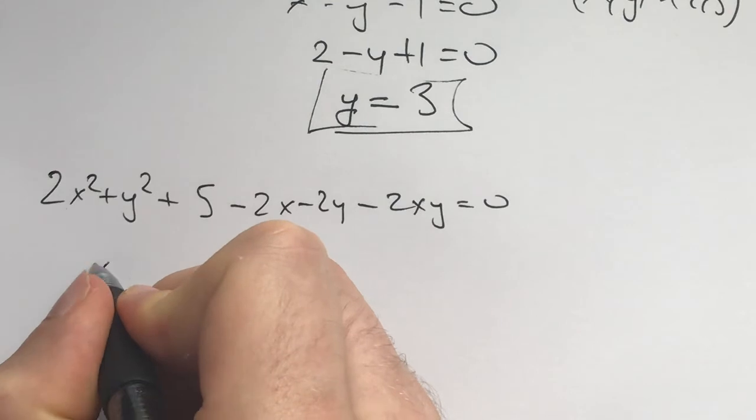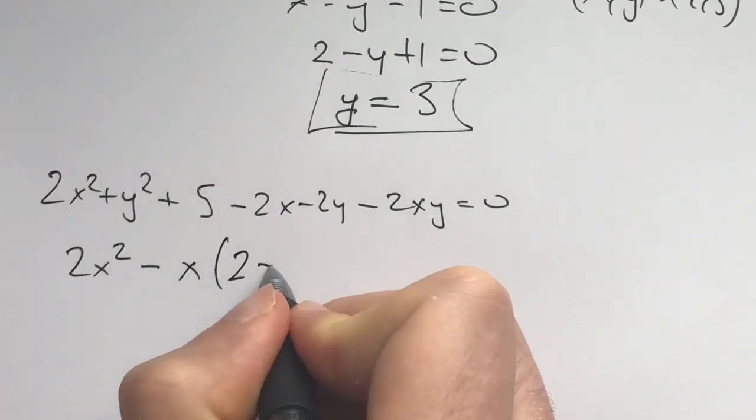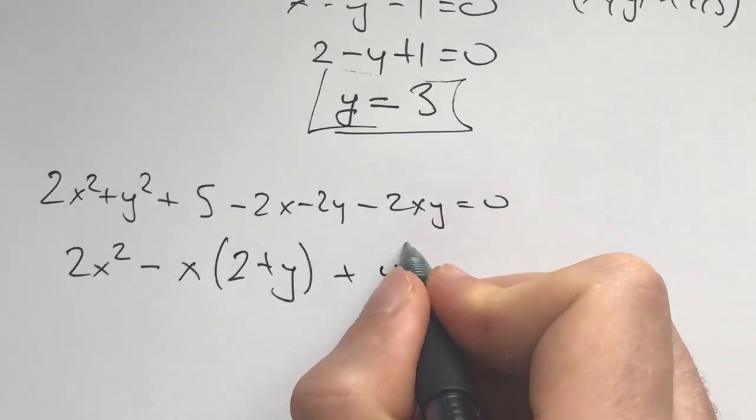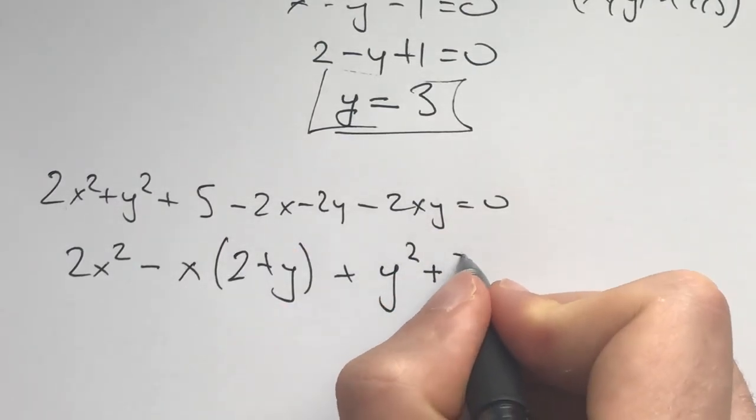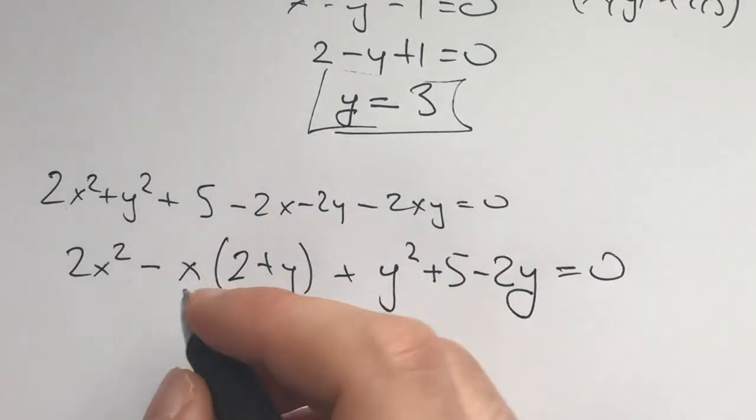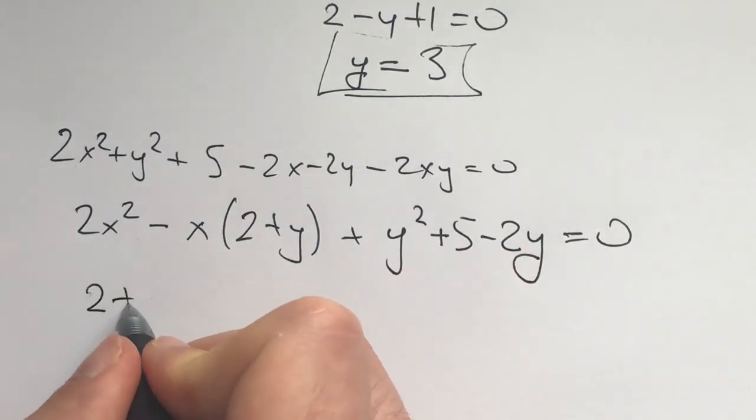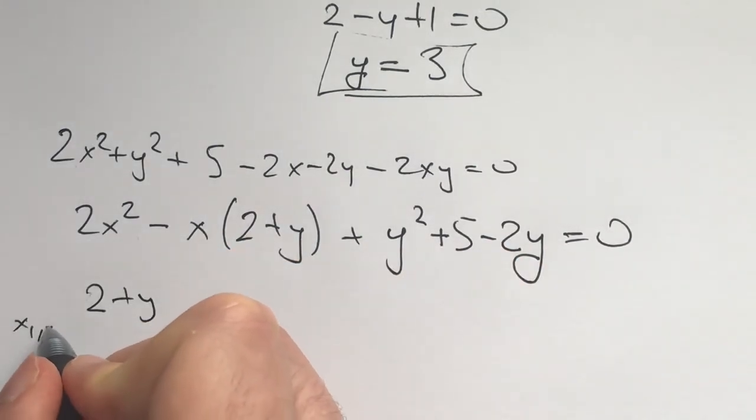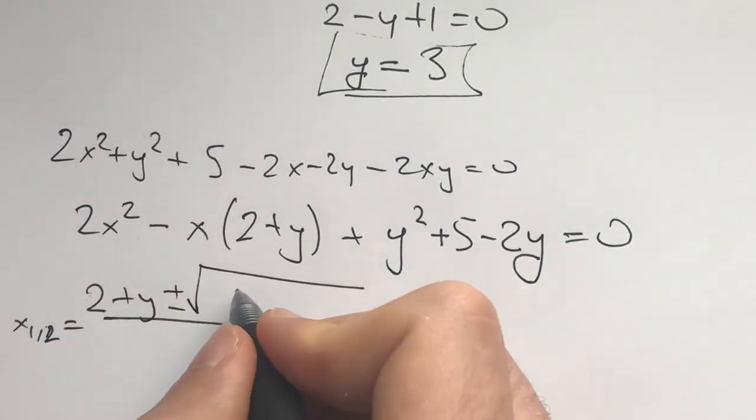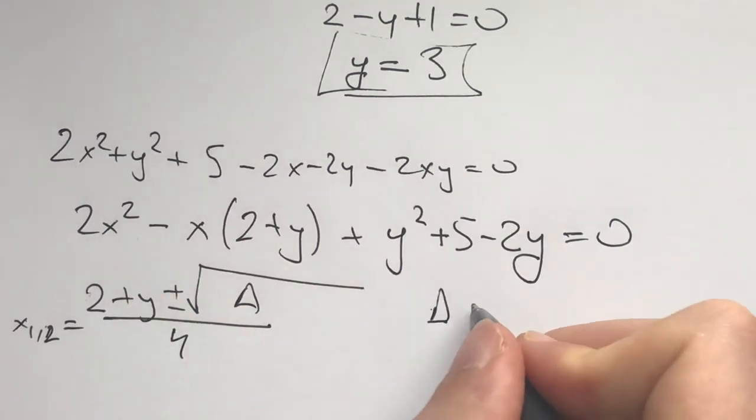I'm going to look at it as a quadratic in x. What do I have? 2x squared minus x times (2 plus y) plus y squared plus 5 minus 2y equals 0. Now the discriminant of this quadratic equation: x₁,₂ equals (2 + y) plus/minus the square root of the discriminant over 4.